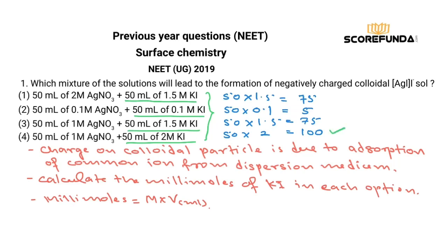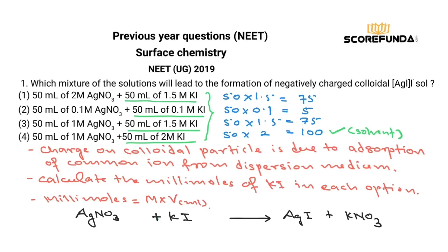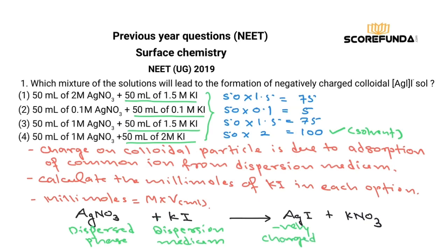For option 4, we have AgNO₃ + KI → AgI + KNO₃, where excess AgNO₃ is the dispersed phase in the dispersion medium. This means the colloidal particles will be positively charged — wait, this should actually give negatively charged colloidal particles. So option 4 is the best answer.